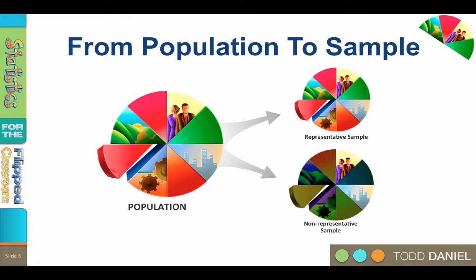In poorly designed research, we learn only about the sample. Nothing that we learn from the sample applies to anyone else. So the research does not replicate. If someone else does the same study, they do not get the same results. Nothing is learned.